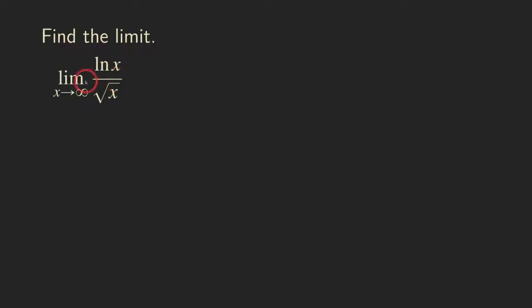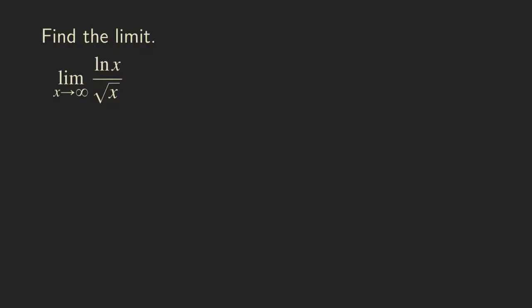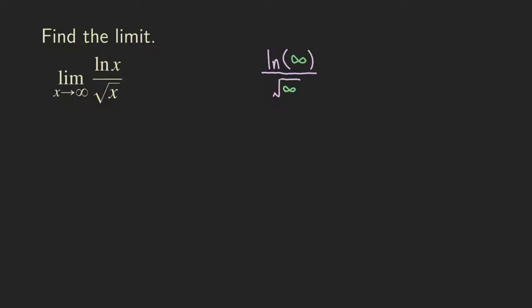Let's check the form first, just in case — we cannot blindly apply L'Hôpital's rule. So first we are going to look at ln of some quantity and also the square root of some quantity, and we're going to plug in infinity there. Infinity is not a number; I'm just making it symbolic here to analyze the form. This is scratch work, not formal work.